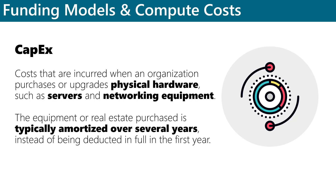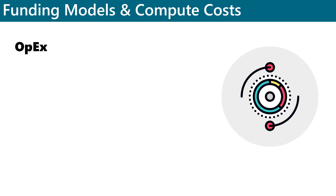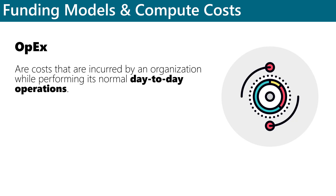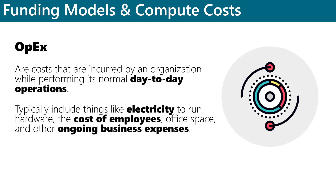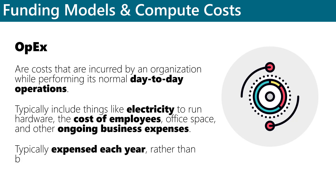Operating expenditures, which are also referred to as OPEX, are costs that are incurred by an organization while performing its normal day-to-day operations. OPEX costs typically include things like electricity required to run the hardware, the cost of employees, office space, and other ongoing business expenses. An organization's management team is responsible for keeping OPEX costs to a minimum without significantly affecting the organization's operations. OPEX costs are typically expensed each year rather than being amortized over time.